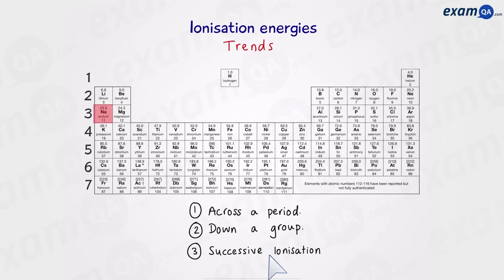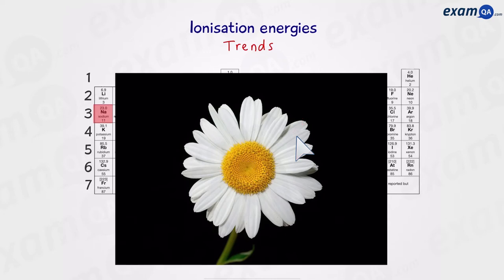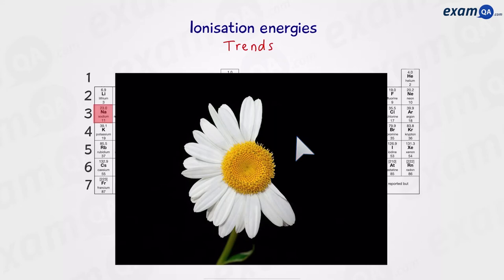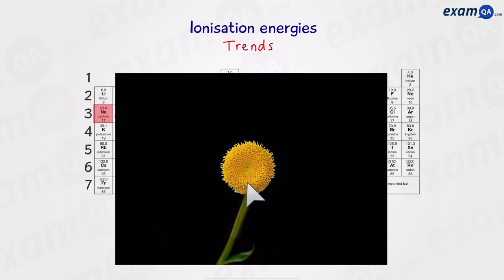Successive ionization energies is when we pick a random element, for example sodium. Imagine the nucleus is here and the electrons are represented by these petals. All we're going to do is take this atom and keep removing electron after electron until we remove all the electrons, and from this we can learn more about the atom.